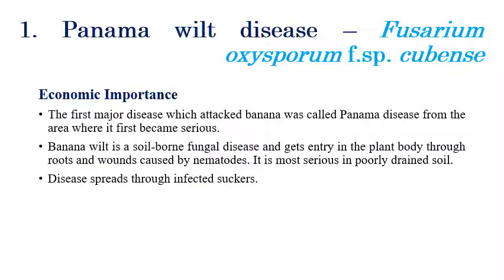The first disease is Panama wilt, caused by Fusarium oxysporum f. sp. cubense. Regarding its economic importance, the disease was first reported in the Panama area — that's why it is called Panama disease or Fusarium wilt. It caused very serious outbreaks in banana-growing areas of Panama.